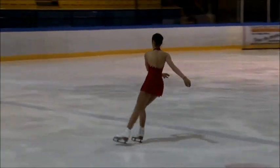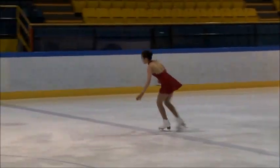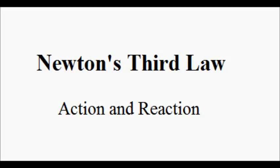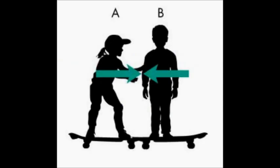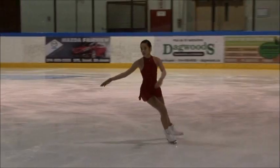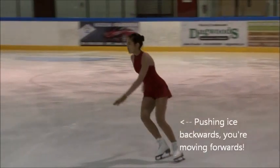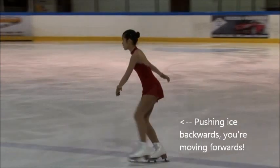Did you notice the skating before I started lifting my leg up? You may or may not be surprised to learn that the reason I'm able to move on the ice is because of Newton's Third Law. Newton's Third Law is also what gets you into the air for a jump. Newton's Third Law states that when object A exerts a force on object B, object B will exert an equal amount of force on object A but in the opposite direction. So you push the ice backwards and the ice pushes you forward.